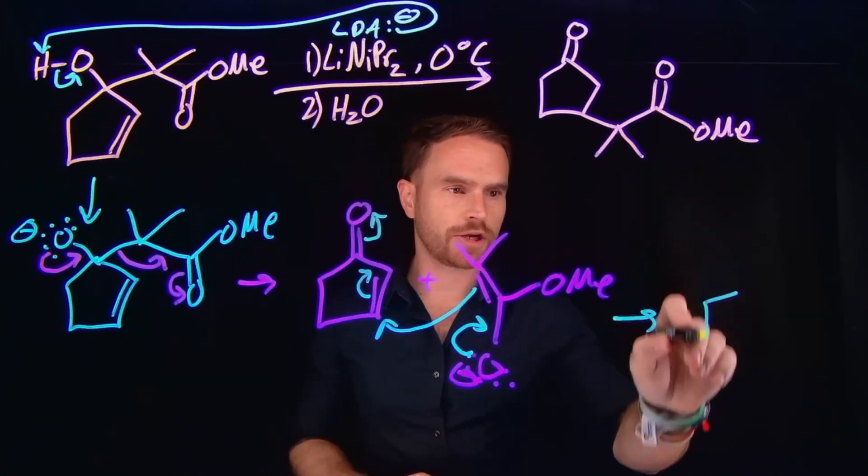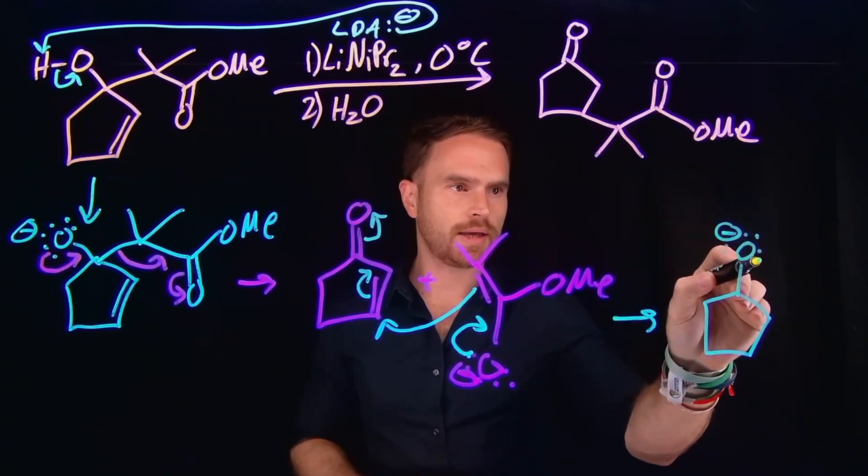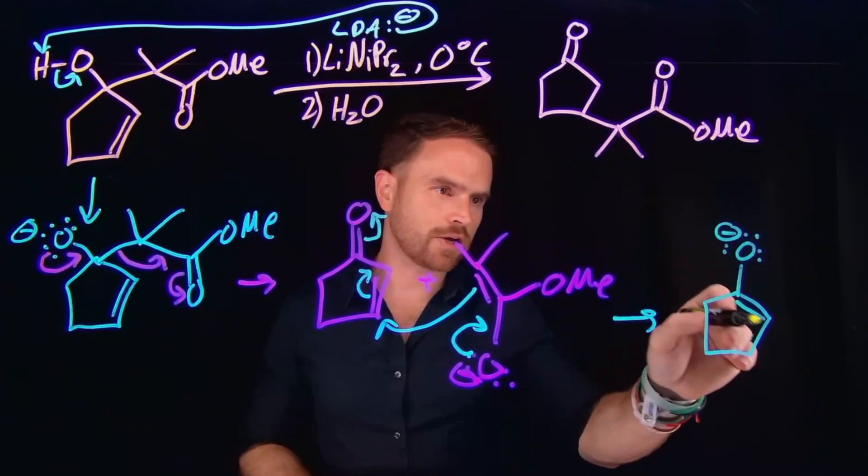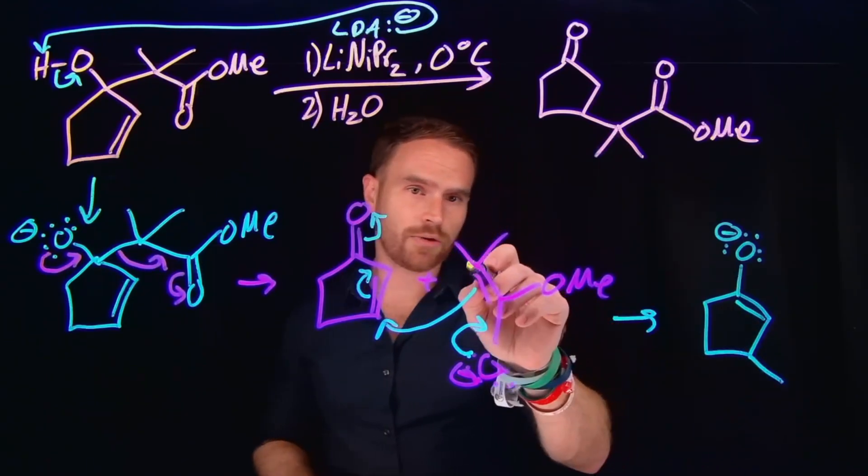So then from here, we've almost generated our final product where now we have our enolate that's formed where we can form this carbon to carbon double bond. Remember we have attached a new carbon to carbon bond here at this alpha carbon position.